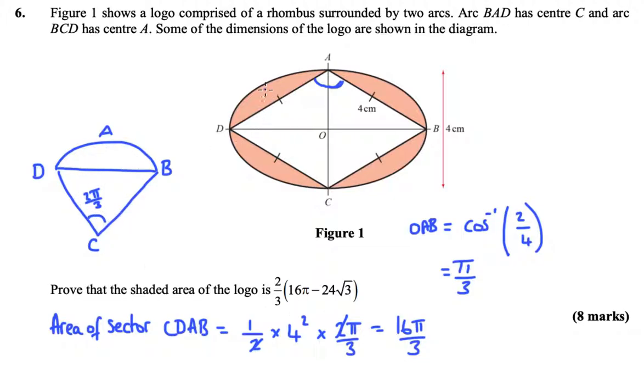So all of this, everything here, these two pink bits and the full area of the rhombus, because remember the rhombus is made up of that, is equal to sixteen pi over three. What we're going to do next is find the area of this triangle here.